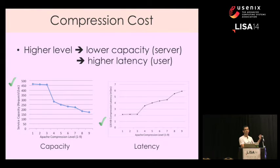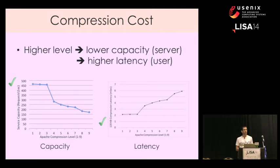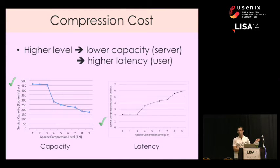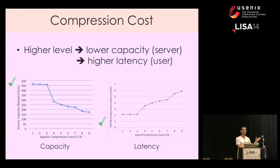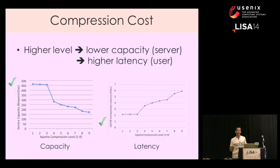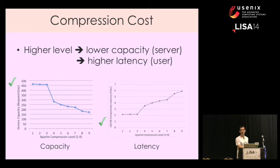One more thing is that the latency — the time it takes to get the first byte of the HTML — is a bit higher. In absolute numbers, it's not really frightening: it takes about two milliseconds to compress a 100 or 120 kilobyte page. But you pay at least two extra milliseconds even if your machine is completely free, not busy with anything else, when you move to level 6, which is the default and most popular level.